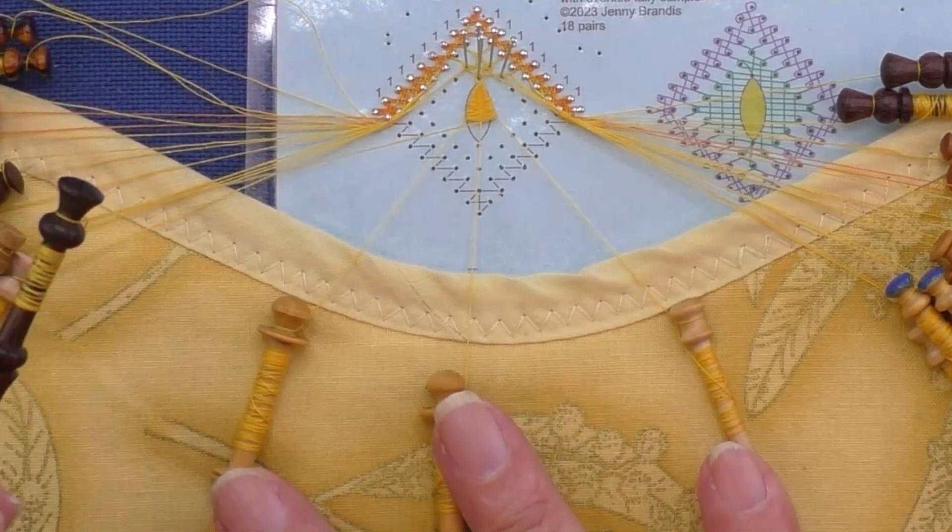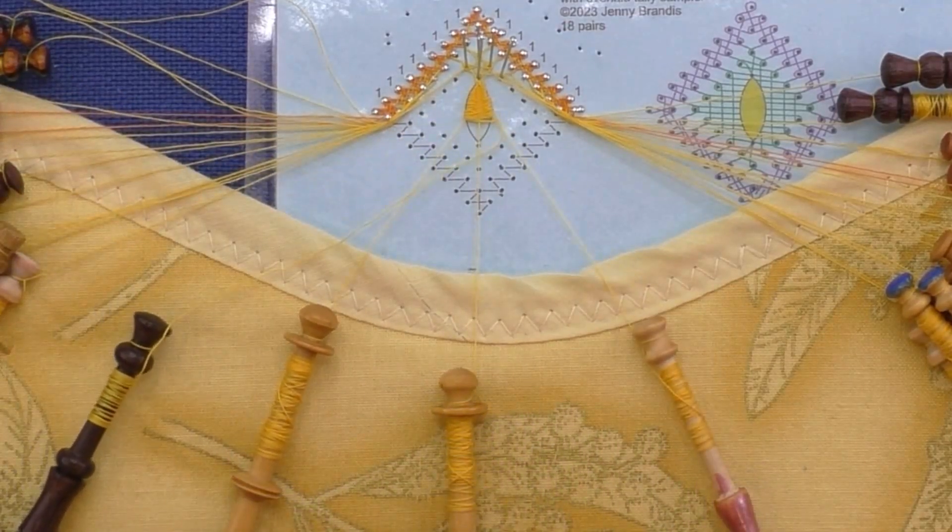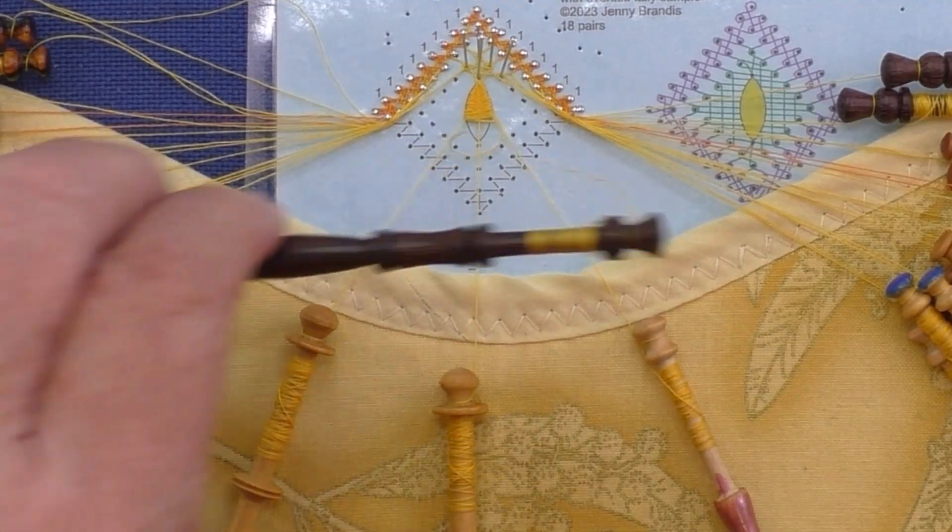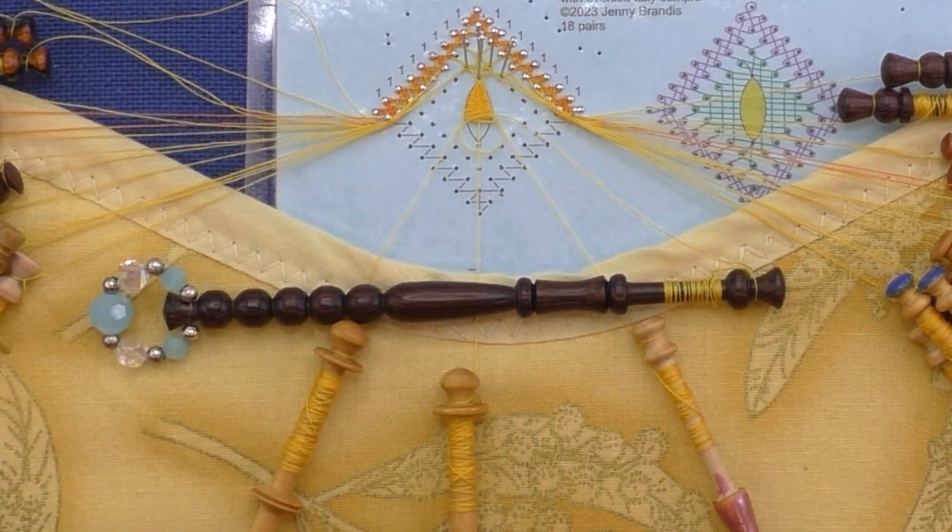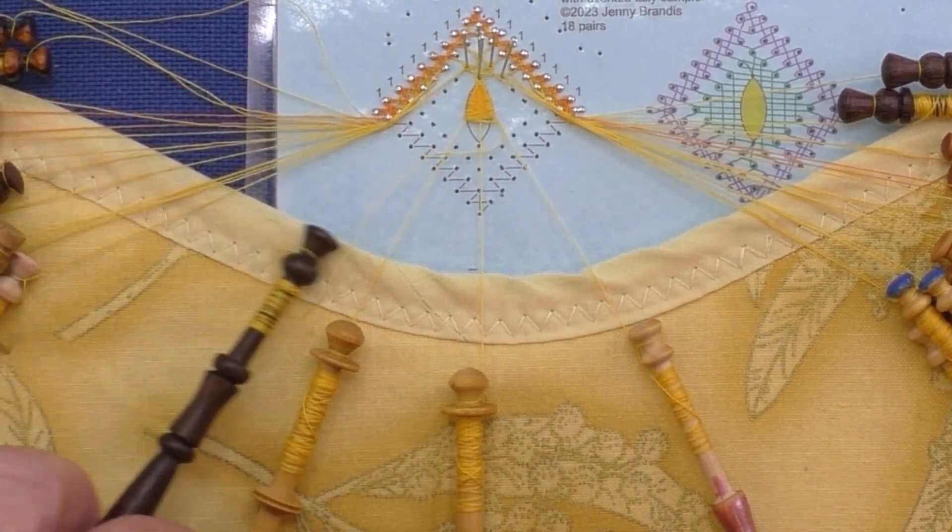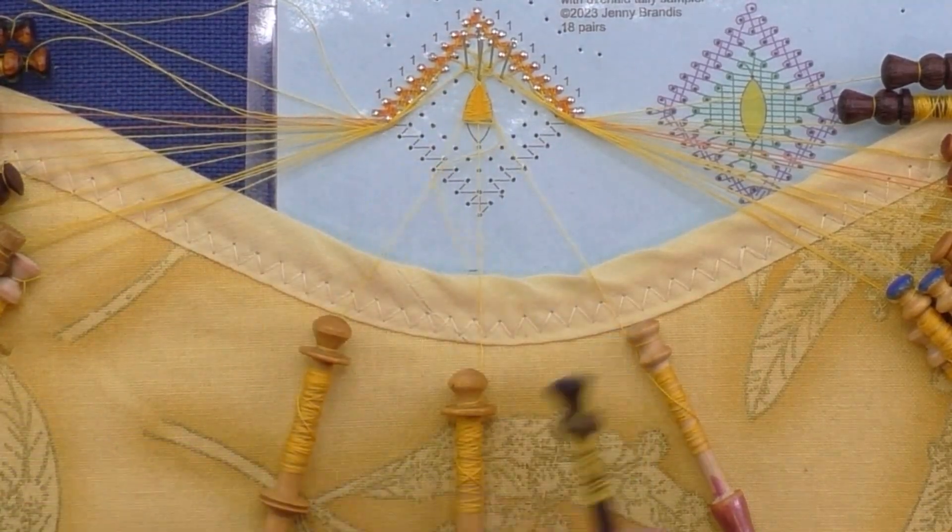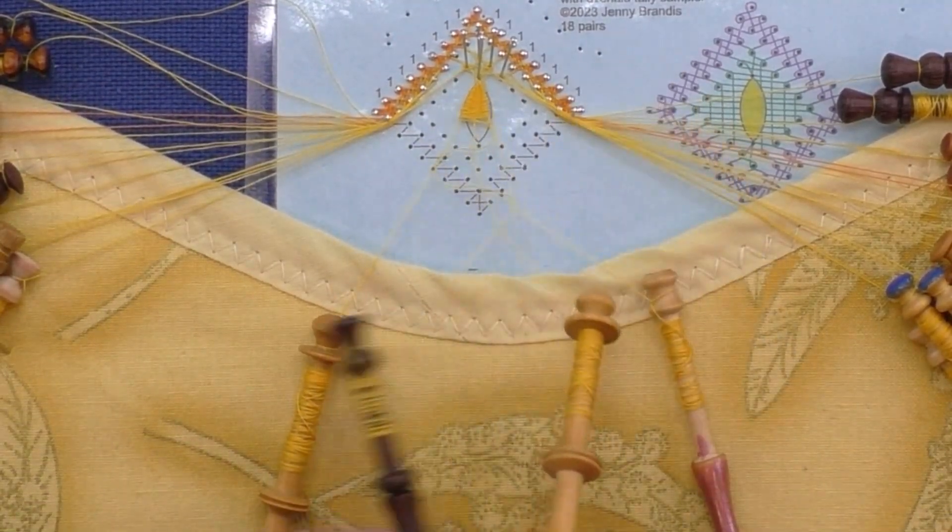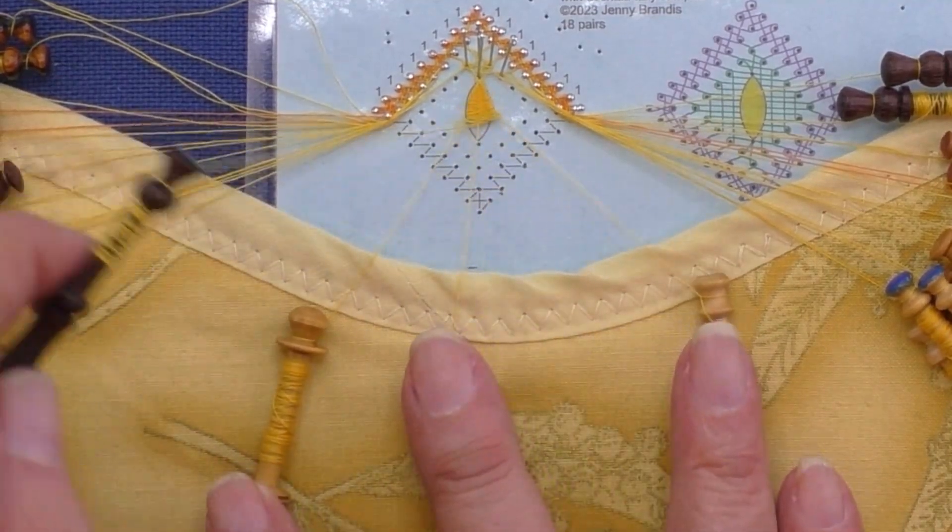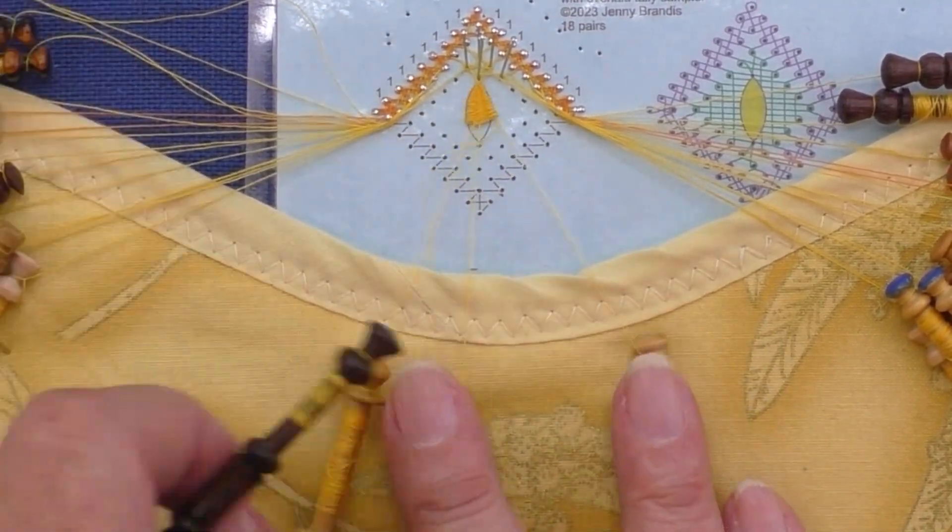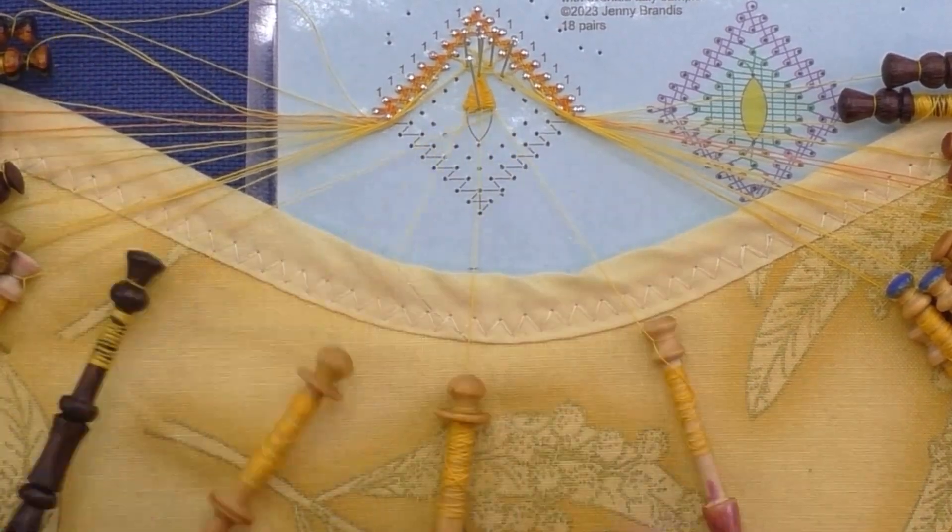If you need to leave your work in the middle of the tally, don't panic. Simply lay the tally bobbin over the top of the other bobbins. That will hold the threads in place, allowing you to pick up where you left off later. Continue working the tally, adding a stabilizing pin if you wish. I did.